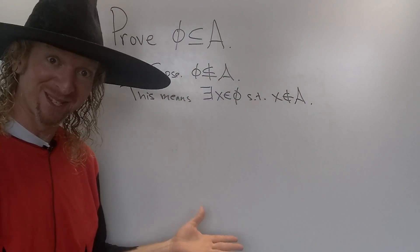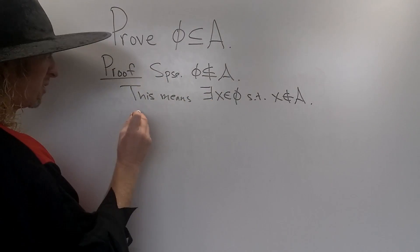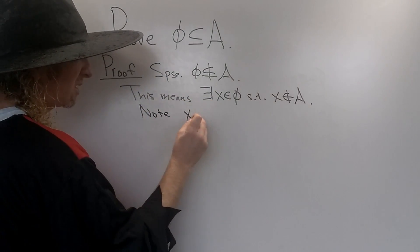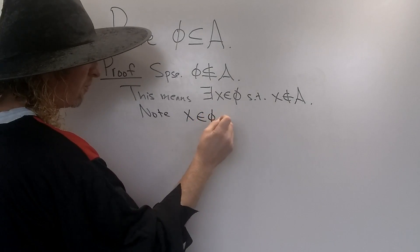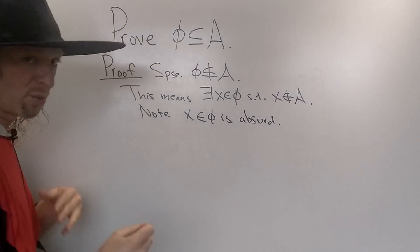And this is where the proof ends, right? We're saying there's an element in the empty set. Note, for us to say there's an element in the empty set is absurd. So we have a contradiction.